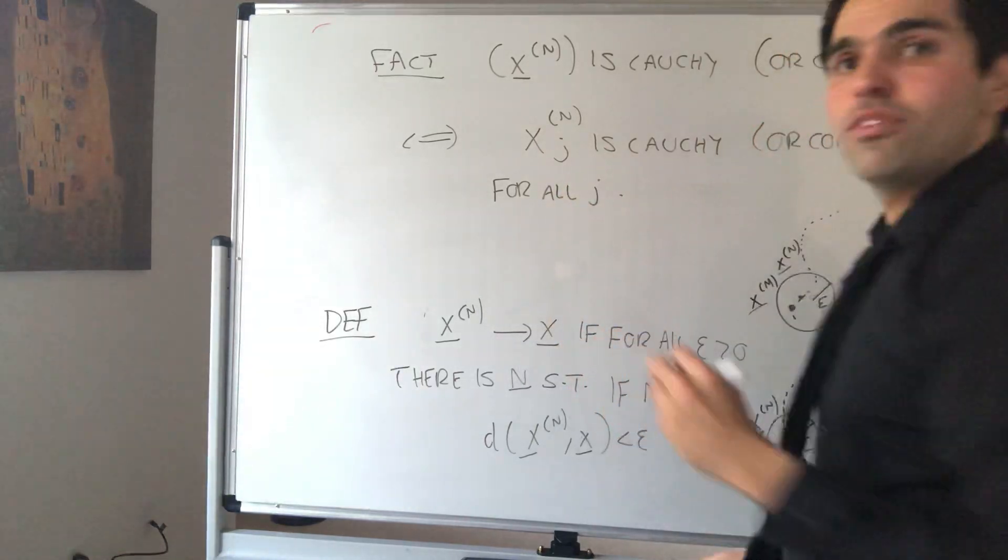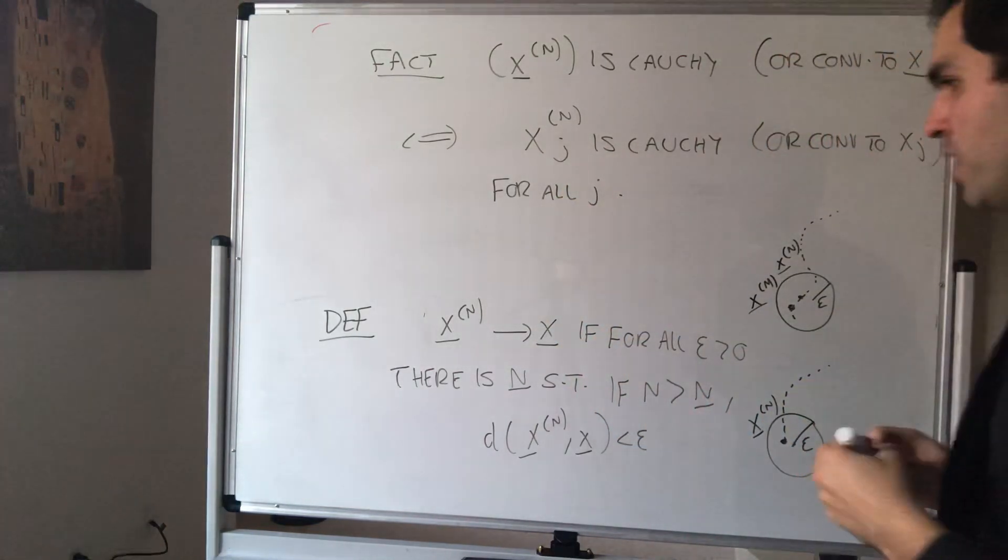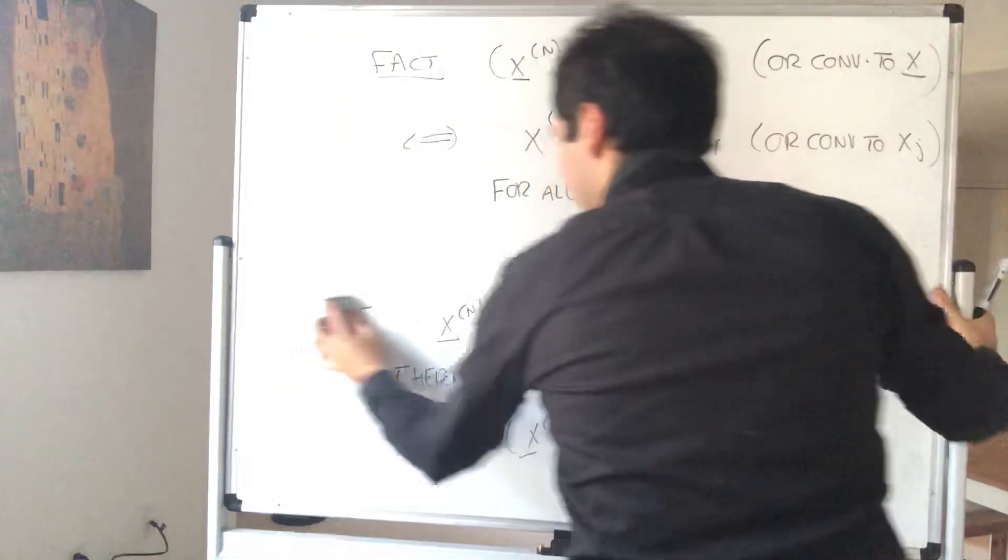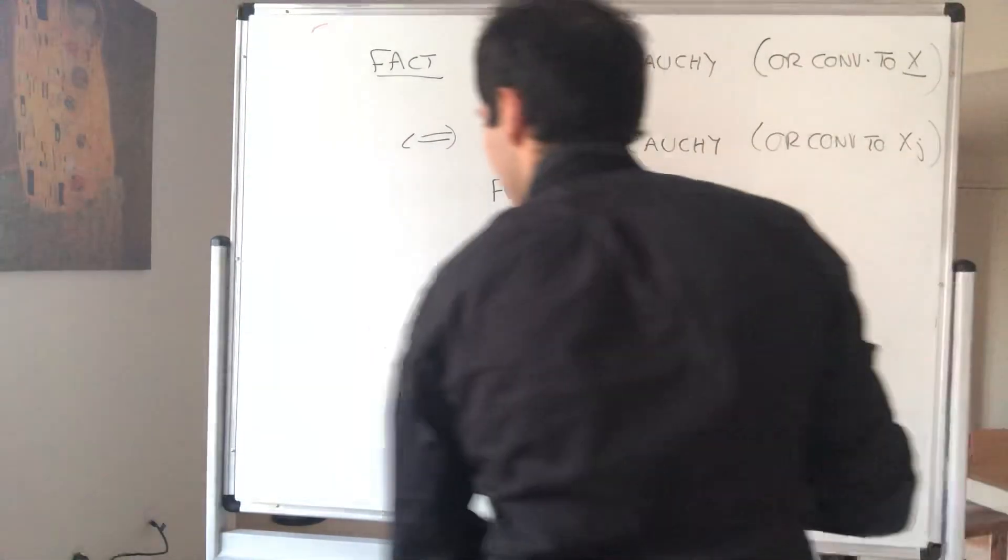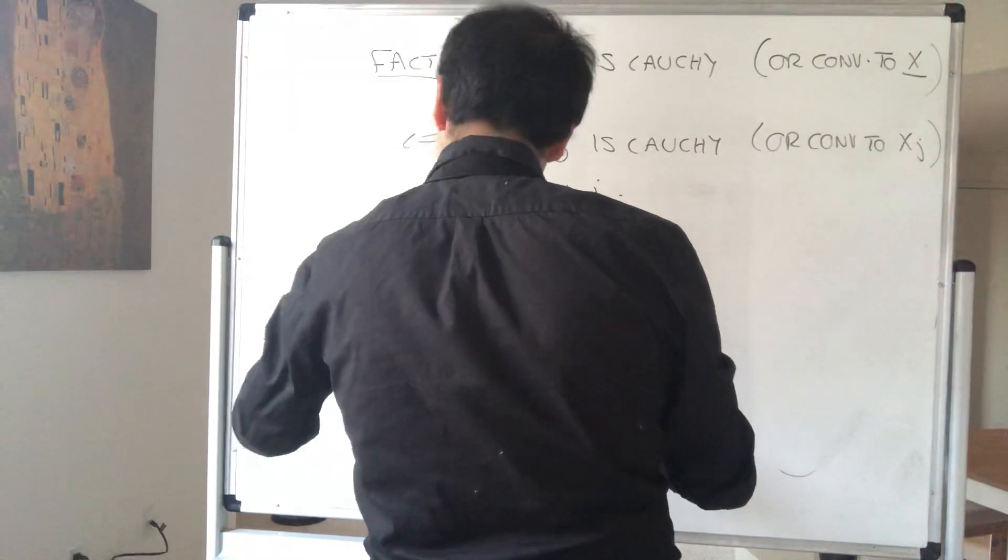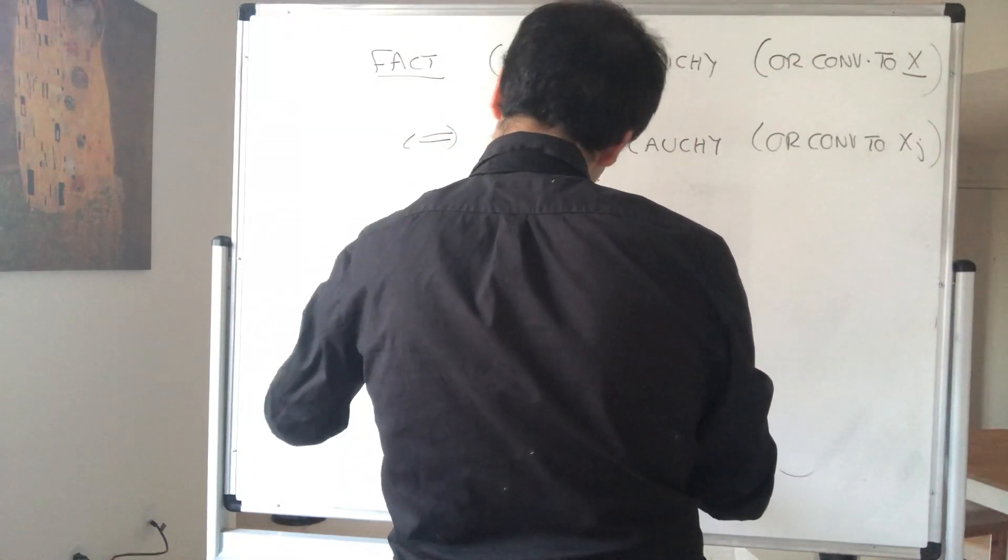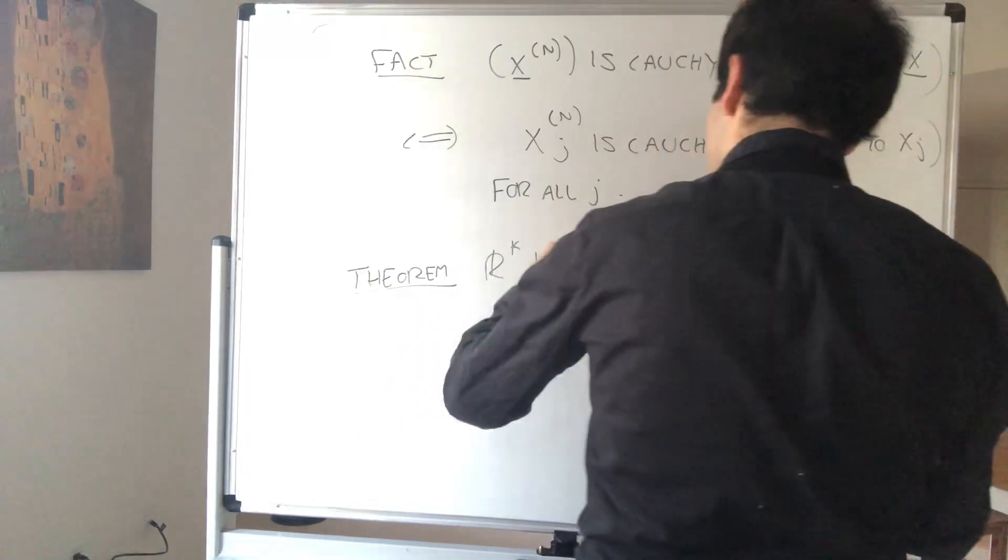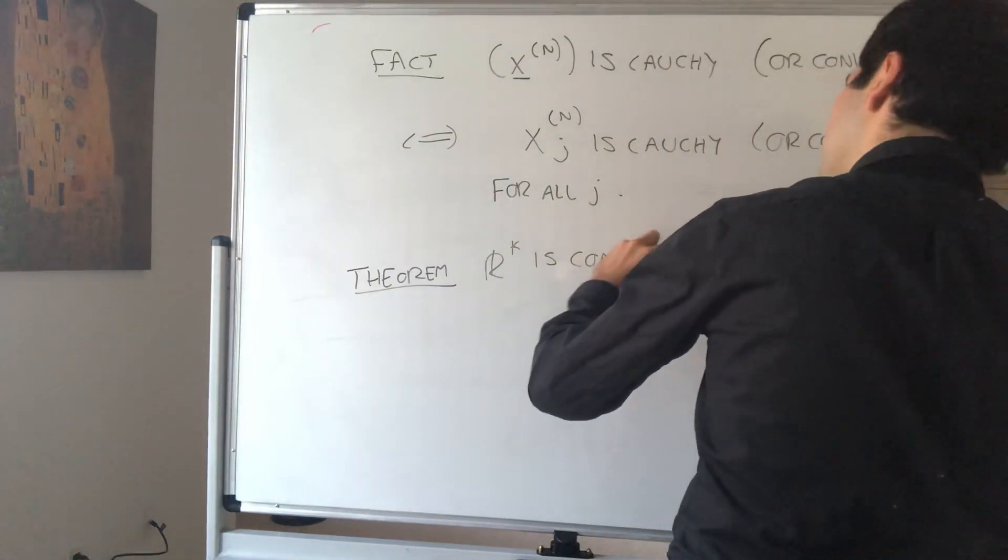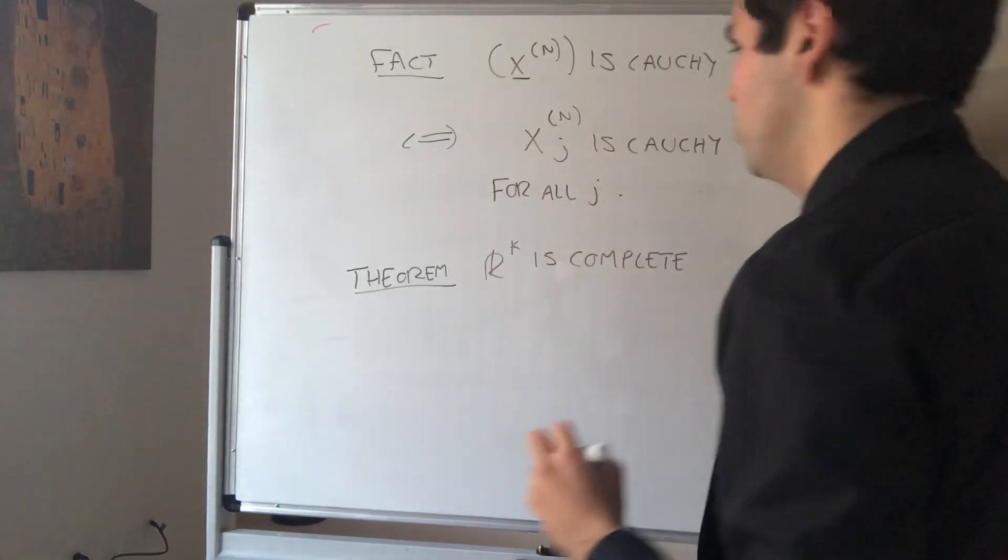And that's the thing that will make it work. So here's a quick proof. Theorem: R^K is complete. Again, all we have to show is that each Cauchy sequence converges.